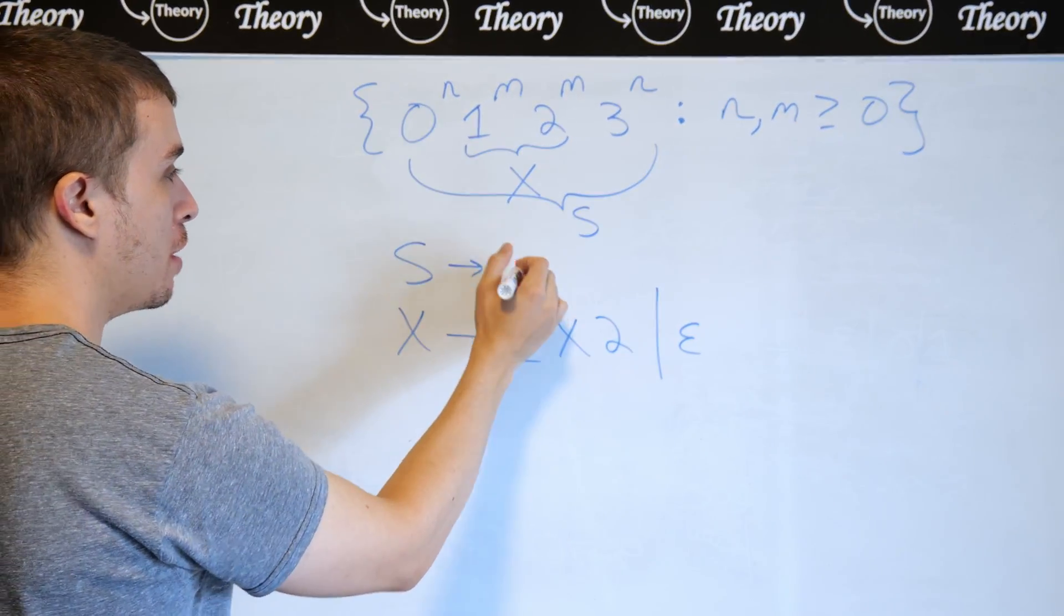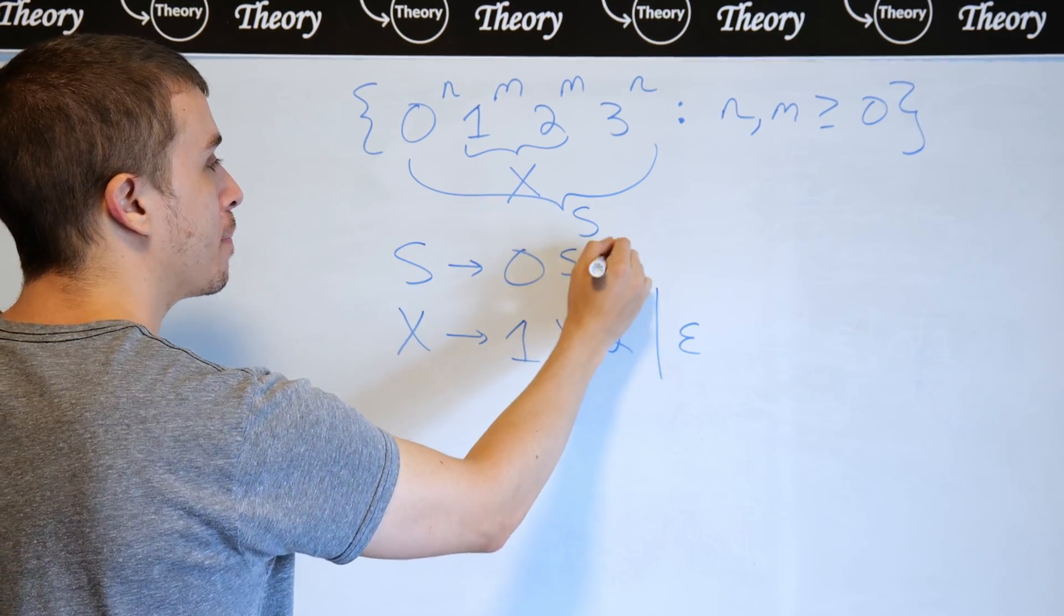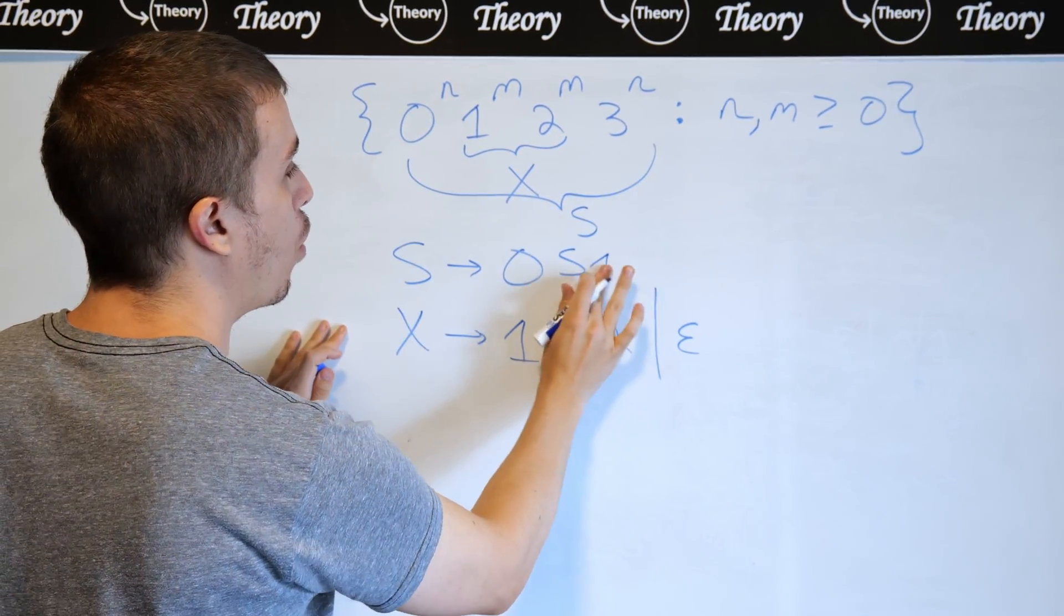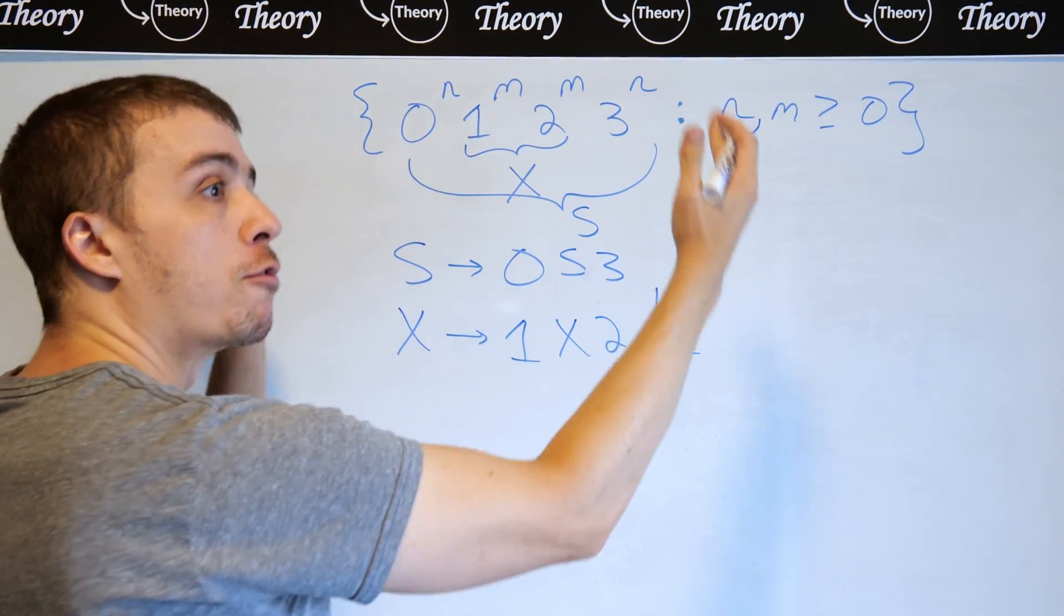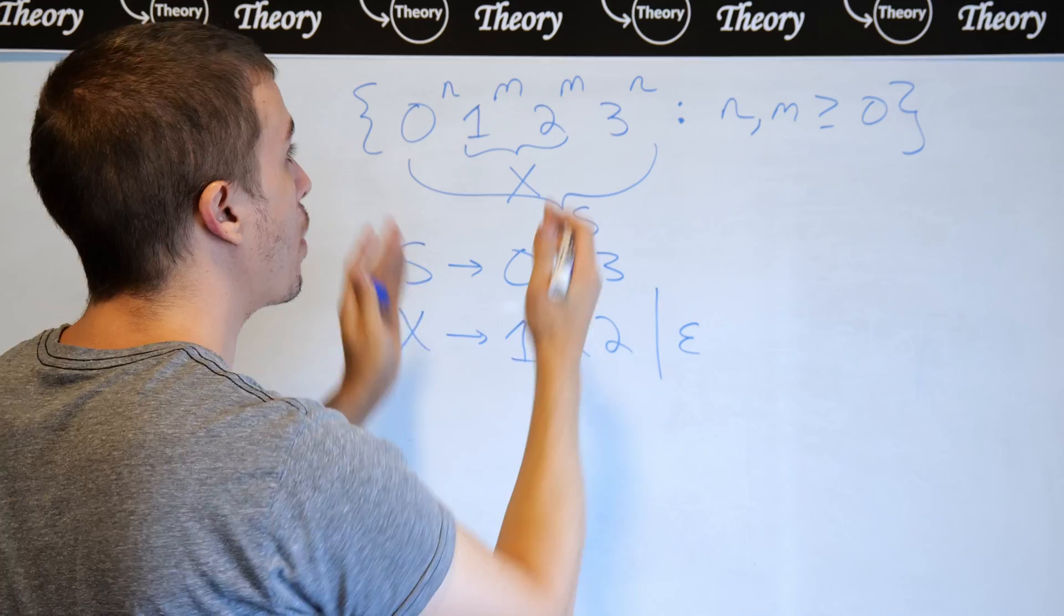Which is going to be 0 s 1. So that's, oh, not one, that should be a three. So 0 s 3, so that's making a zero on the front, three on the end, and then just working our way in.